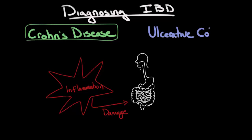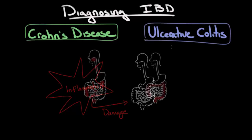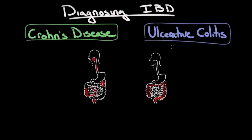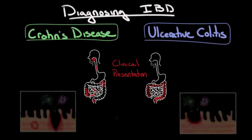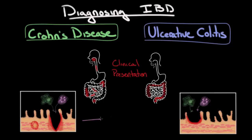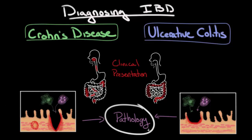Crohn's disease and ulcerative colitis can be distinguished from one another based on the location of inflammation and the pathologic changes. The location of inflammation becomes really important for the clinical presentation of the disease. It's this clinical presentation that will drive the diagnostic workup that will ultimately lead to a biopsy, which will determine the pathology that makes the diagnosis. Unfortunately, there's no single blood test or physical exam maneuver that can diagnose either type of inflammatory bowel disease.